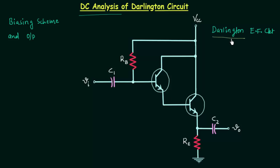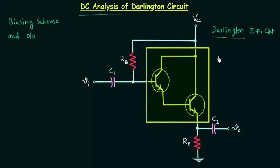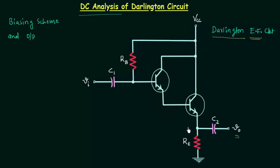Darlington is in the name because we have the Darlington pair in the circuit, and emitter follower is there because the output is taken from the emitter terminal. You can see the output V0 is taken from the emitter terminal, and whenever we take the output from the emitter terminal we call it emitter follower configuration. For normal amplifiers we take the output from the collector terminal. This terminal is the base terminal and this is the collector terminal. Now we will perform the DC analysis of this Darlington emitter follower circuit.